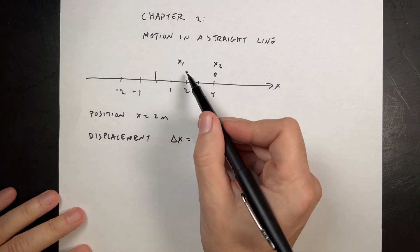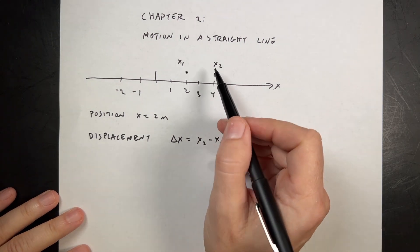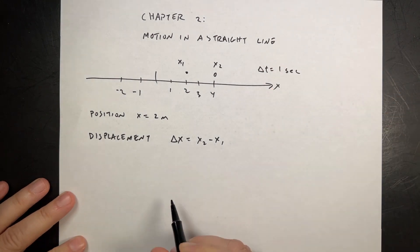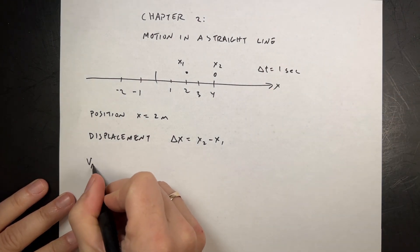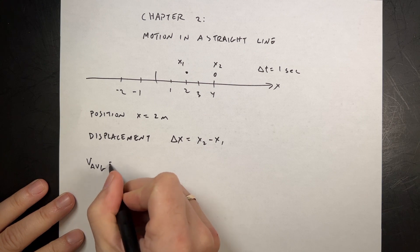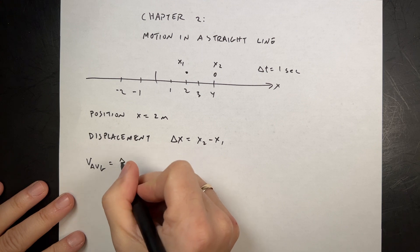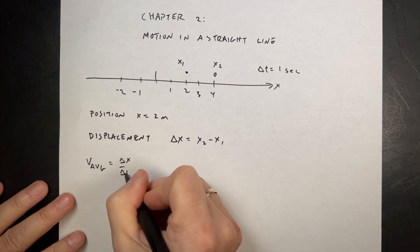Now let's say that I go from x1 to x2 in a time interval delta t equals one second. In that case, I can define the average velocity in one dimension. We'll get into two dimensions later.